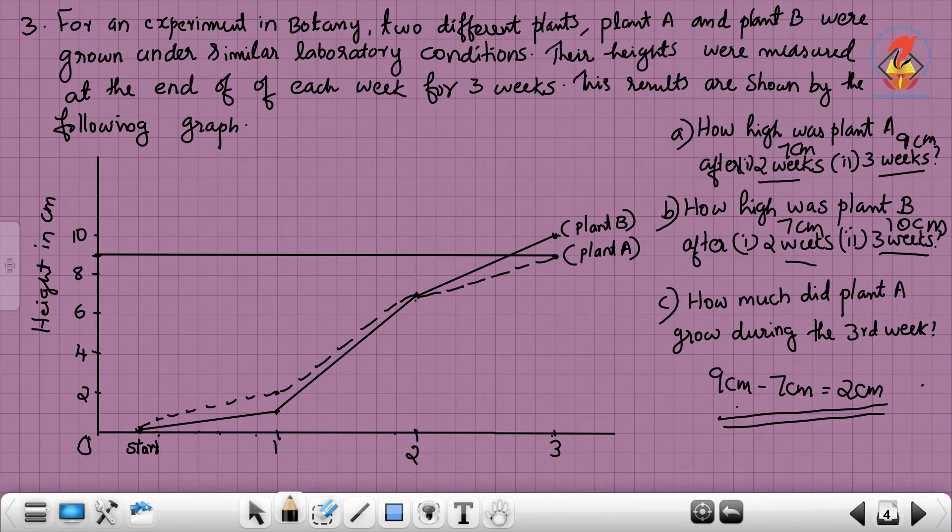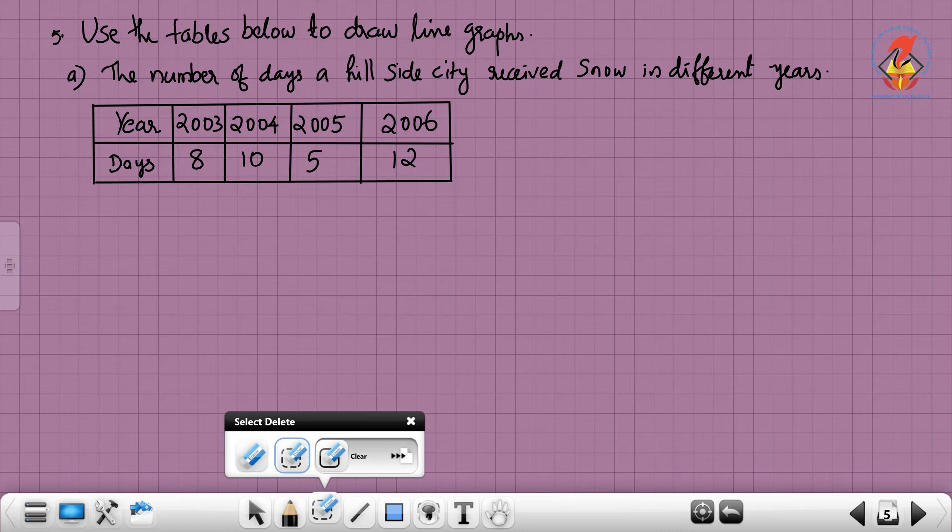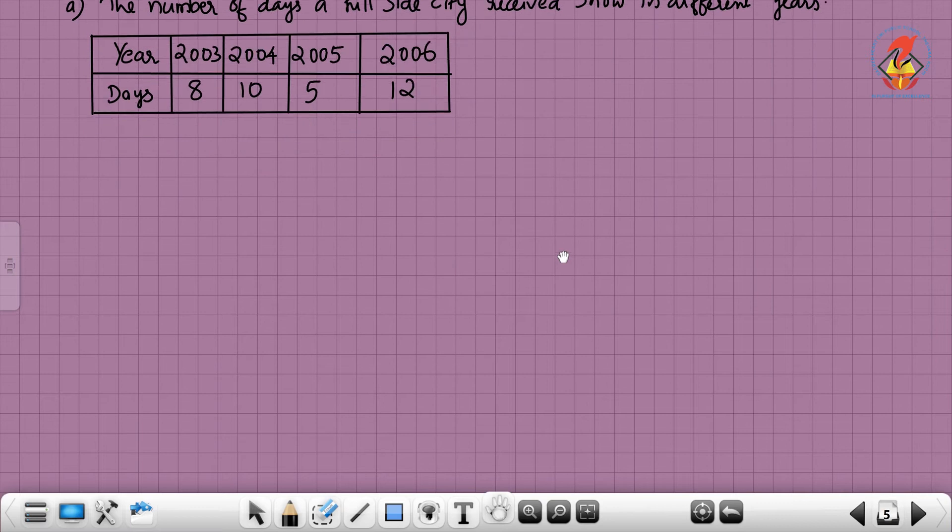The remaining questions are homework. Next, use the tables below to draw a line graph. The number of days a hillside city received snow in different years. Here, years and days are already given: 2003, 2004, 2005, 2006. Days: 8, 10, 5, 12.